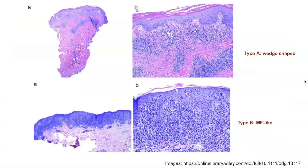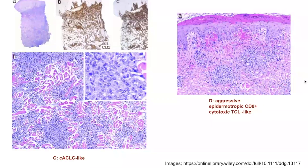Images are shown demonstrating the type A wedge-shaped histology of lymphomatoid papulosis on the top half of the screen, and a mycosis fungoides-like histological appearance on the bottom. A further example shows cutaneous anaplastic large cell lymphoma-like LYP on the left, and the more aggressive epidermotropic CD8 positive cytotoxic T-cell lymphoma-like histological appearance on the right.